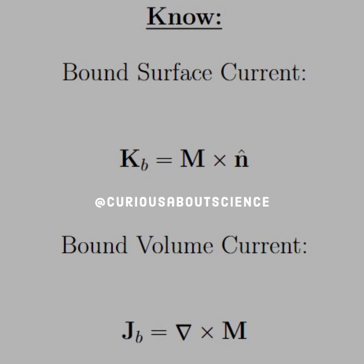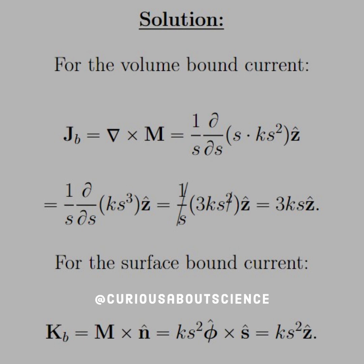You may recall from the last question the bound currents — both surface and volume — given by M cross n̂ and the curl of M respectively. The curl of M is written out in cylindrical coordinates in the inside covers of the book, so we use that.